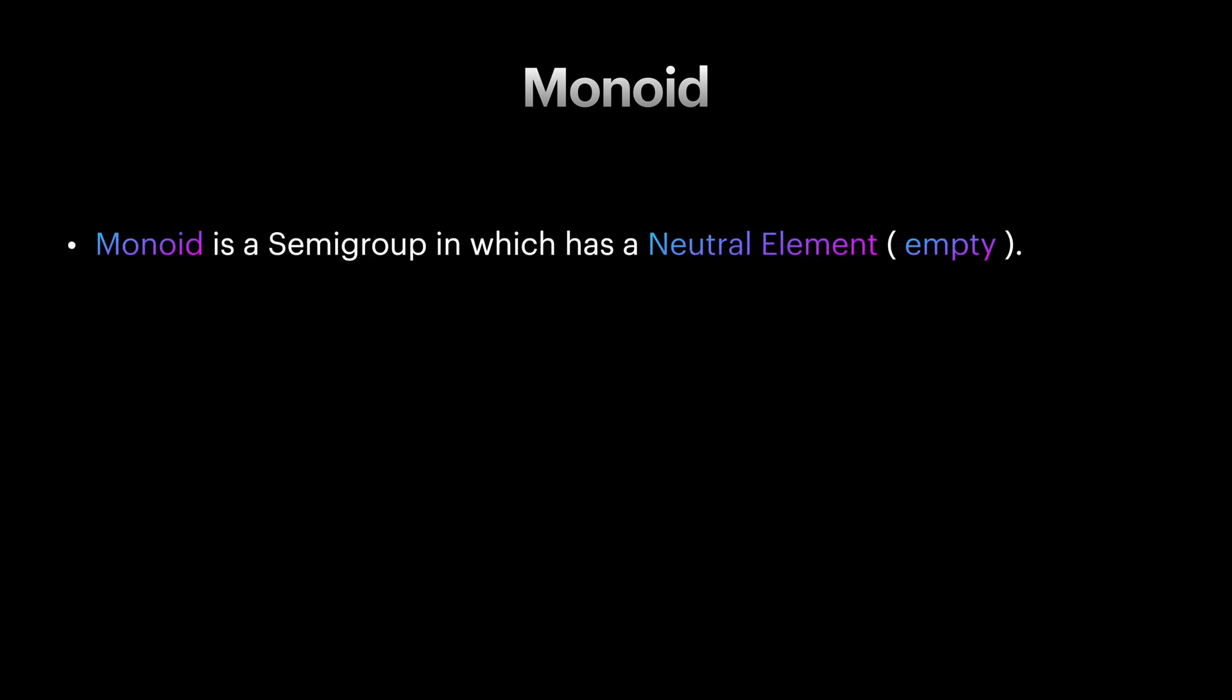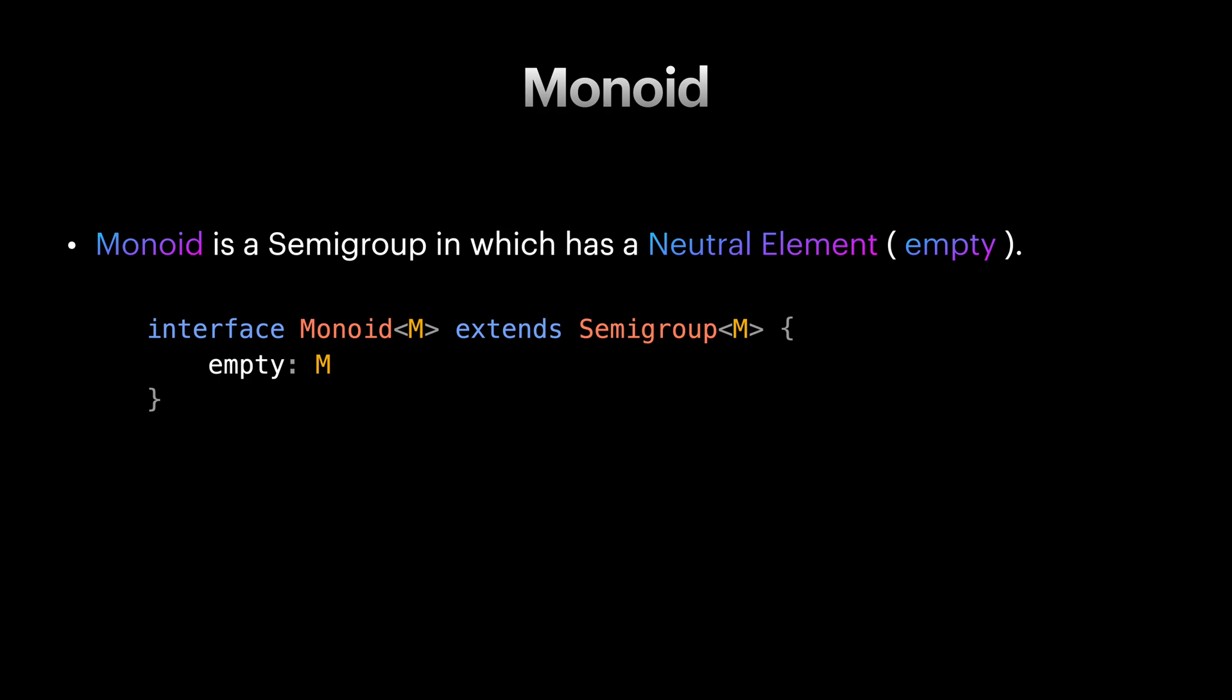It is called monoid. Monoids are semigroups with an extra information. They have a special element which is called neutral element or empty element. The reason for this naming is this element acts like an identity for concatenations.